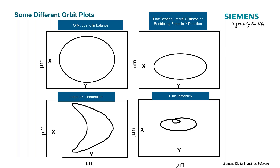Here are a few different orbit plot examples to give you a flavor of what some orbits can look like. A first-order imbalance typically looks like a circle or an oval — it might be slightly rotated but is typically a standard circular-type orbit. An elliptical orbit would be due to either low bearing stiffness in the lateral direction, or a restricting force in the Y direction that's pushing down on the shaft and not allowing it to move more widely.